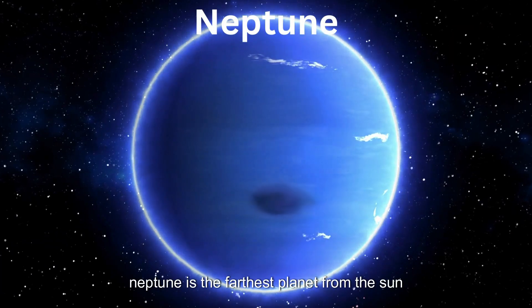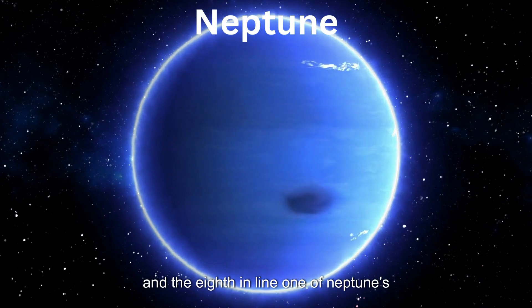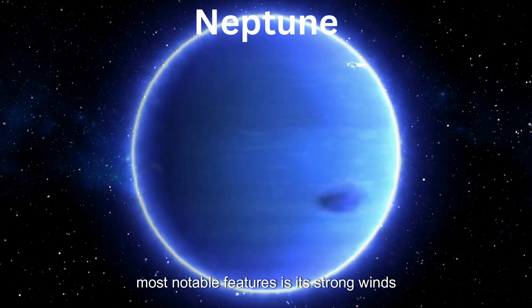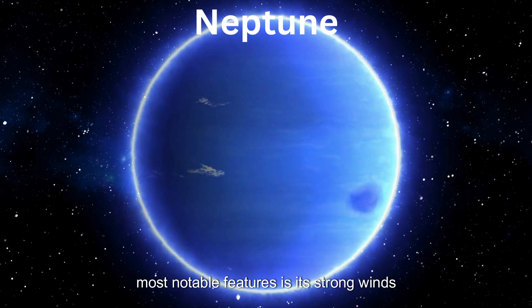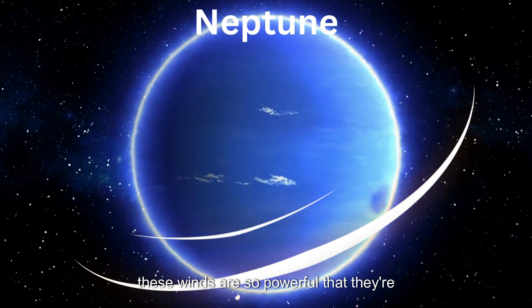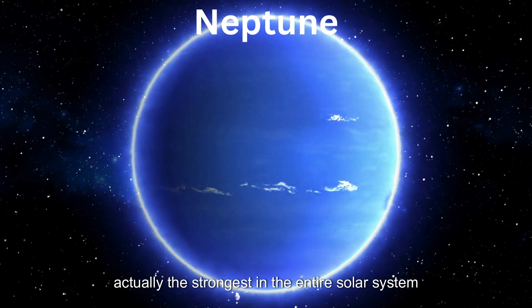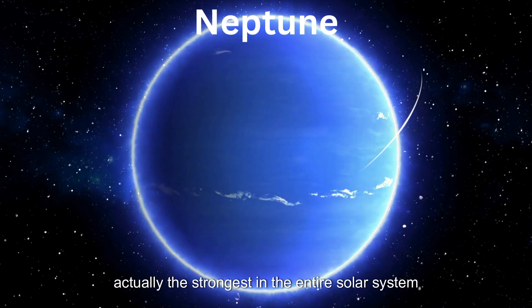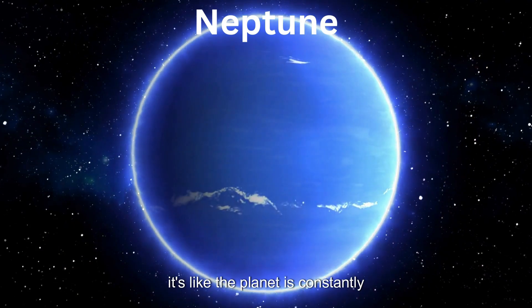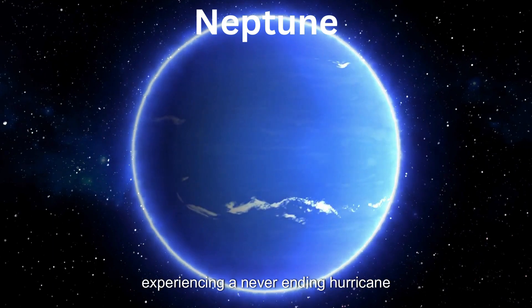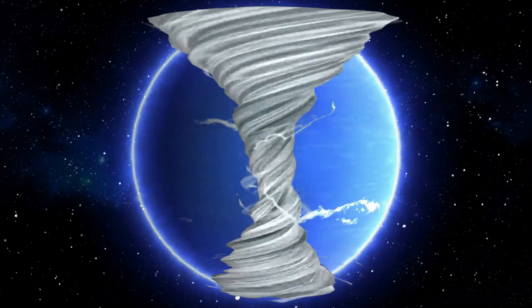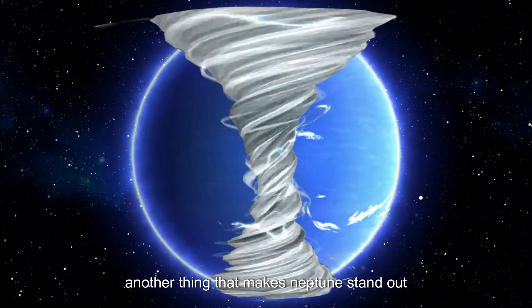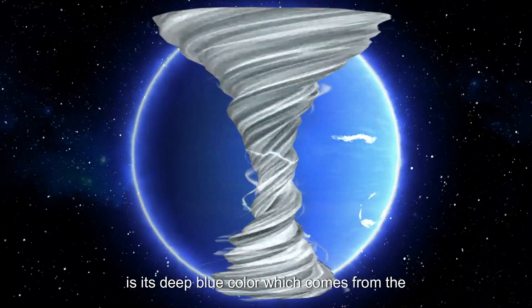Neptune is the farthest planet from the Sun and the eighth in line. One of Neptune's most notable features is its strong winds. These winds are so powerful that they're actually the strongest in the entire solar system. Can you imagine? It's like the planet is constantly experiencing a never-ending hurricane.